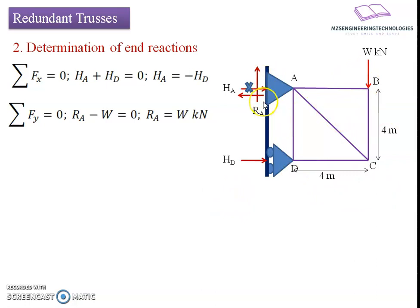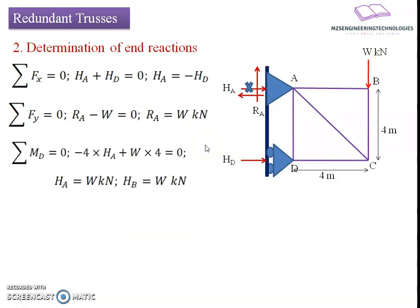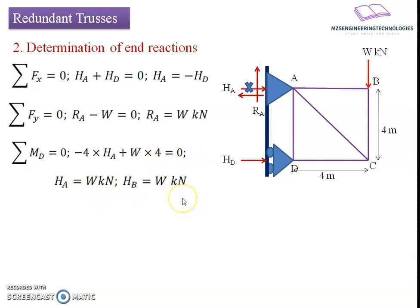From equilibrium of vertical forces, RA minus W equals 0, so RA equals W kilonewton. Using the third equation — summation of moments at joint D equals 0 — we get: minus 4·HA plus W·4 equals 0, resulting in HA equals W kilonewton. Similarly, HD equals W kilonewton. Thus we have obtained all unknown reactive forces.